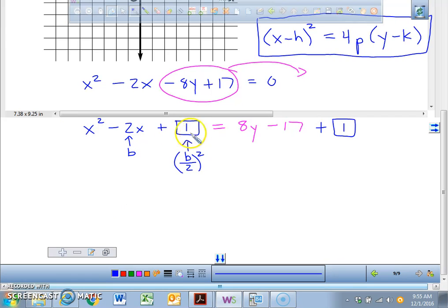Now, what does this factor, what is all of that factor? X minus 1 squared equals 8y minus 16. Because all I did was combine the negative 17 and the 1. Now we're almost done, everybody. We're almost done with our equation.